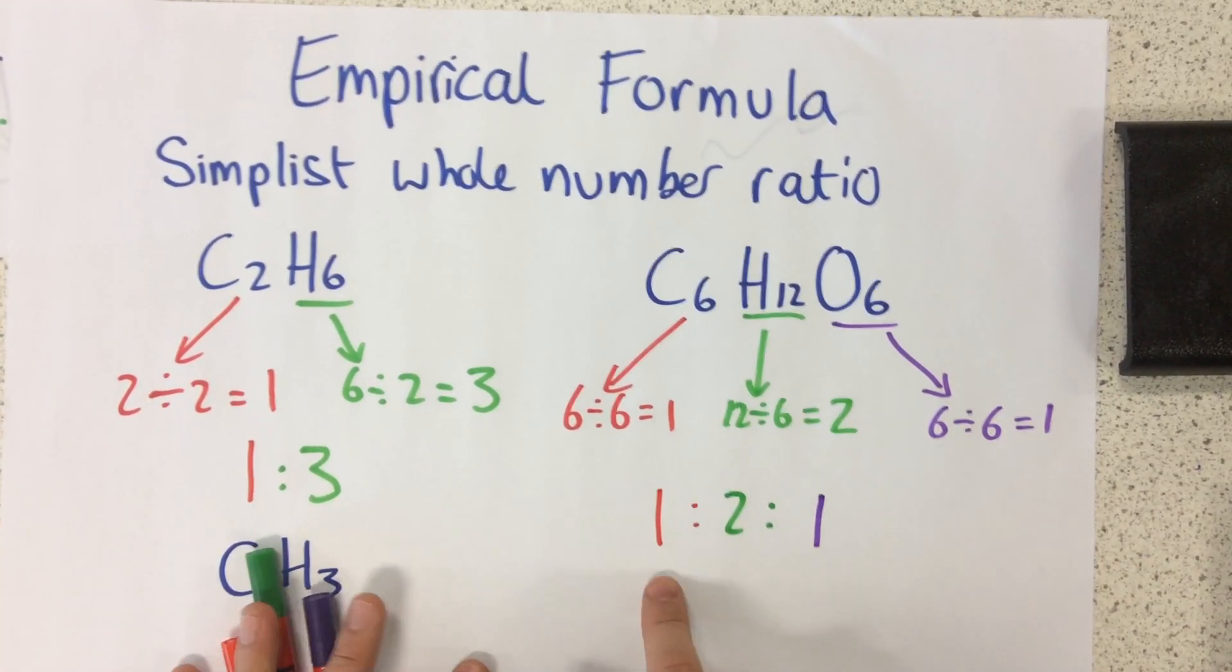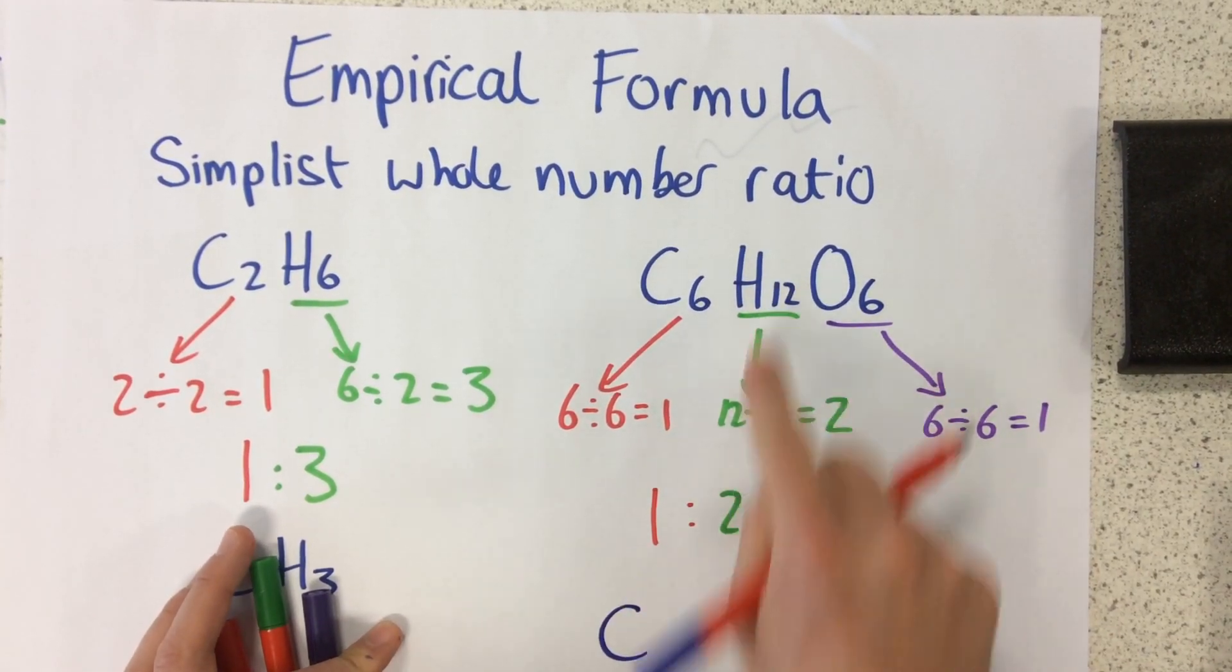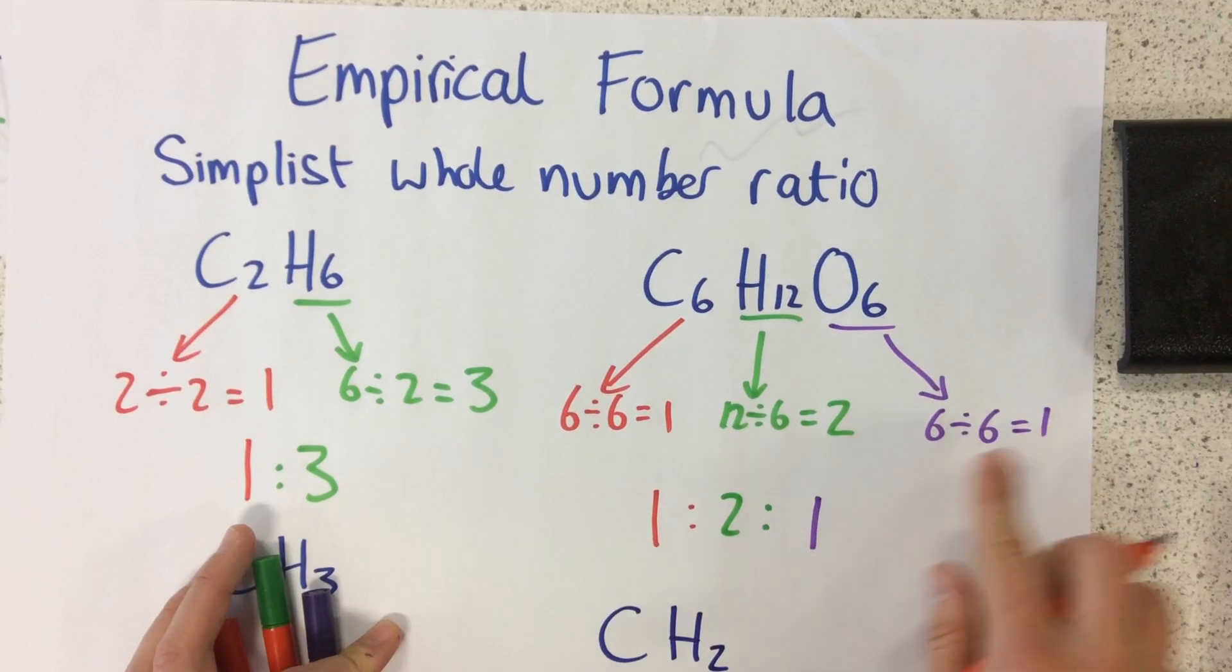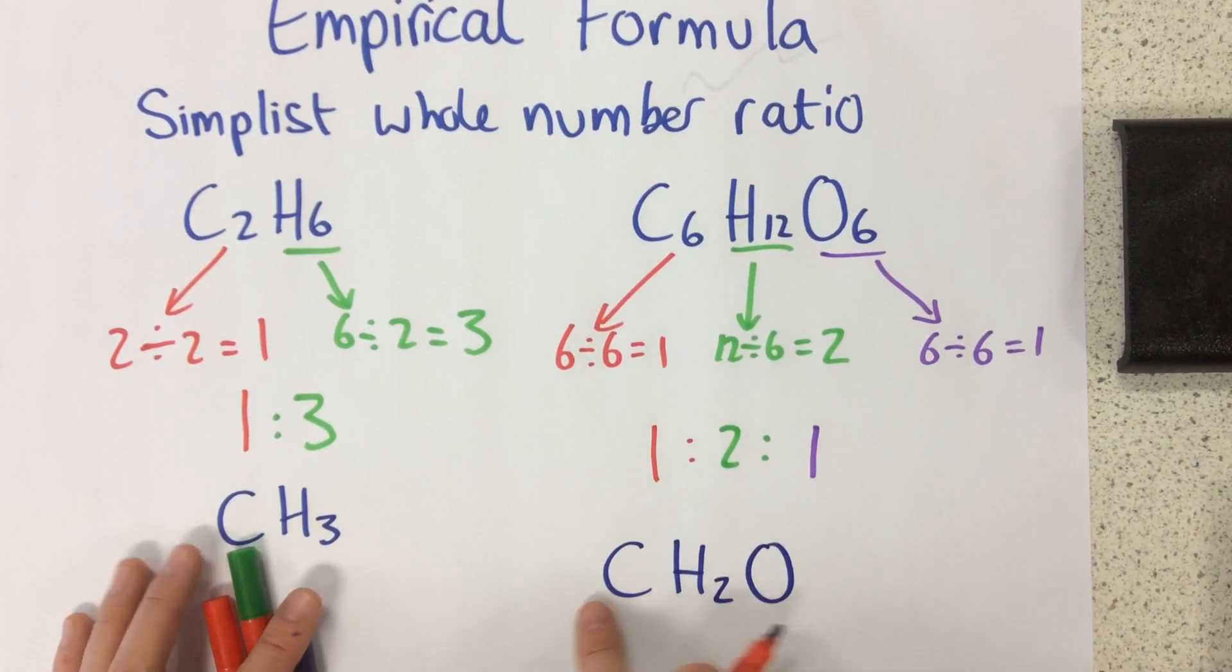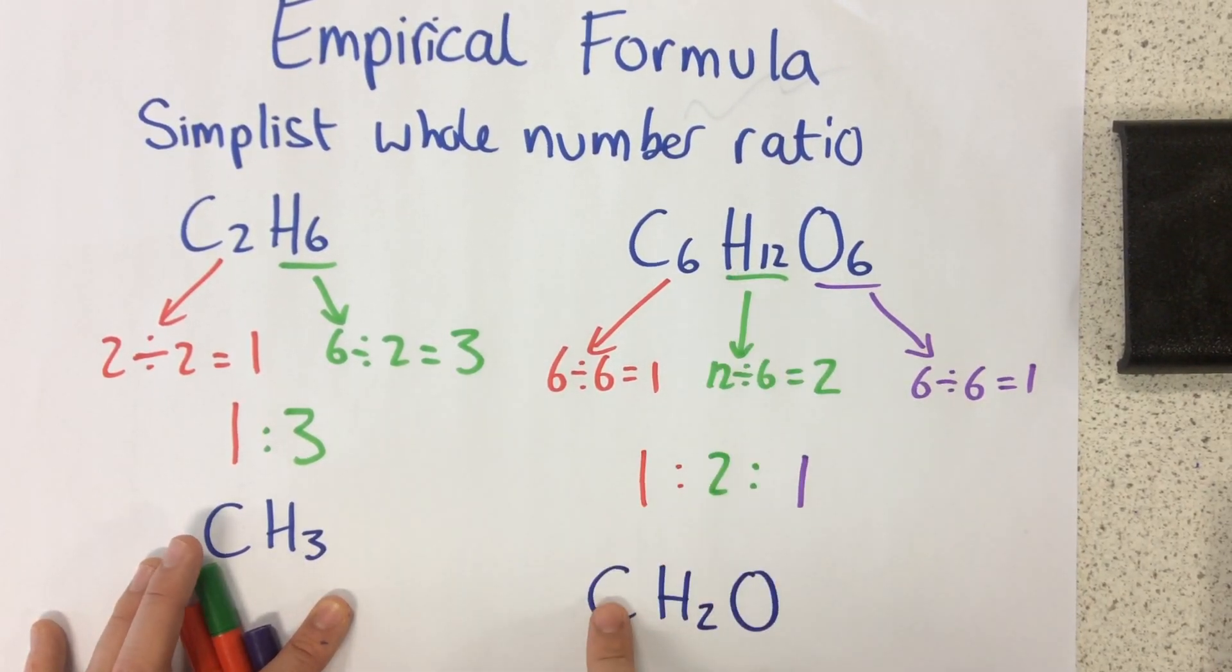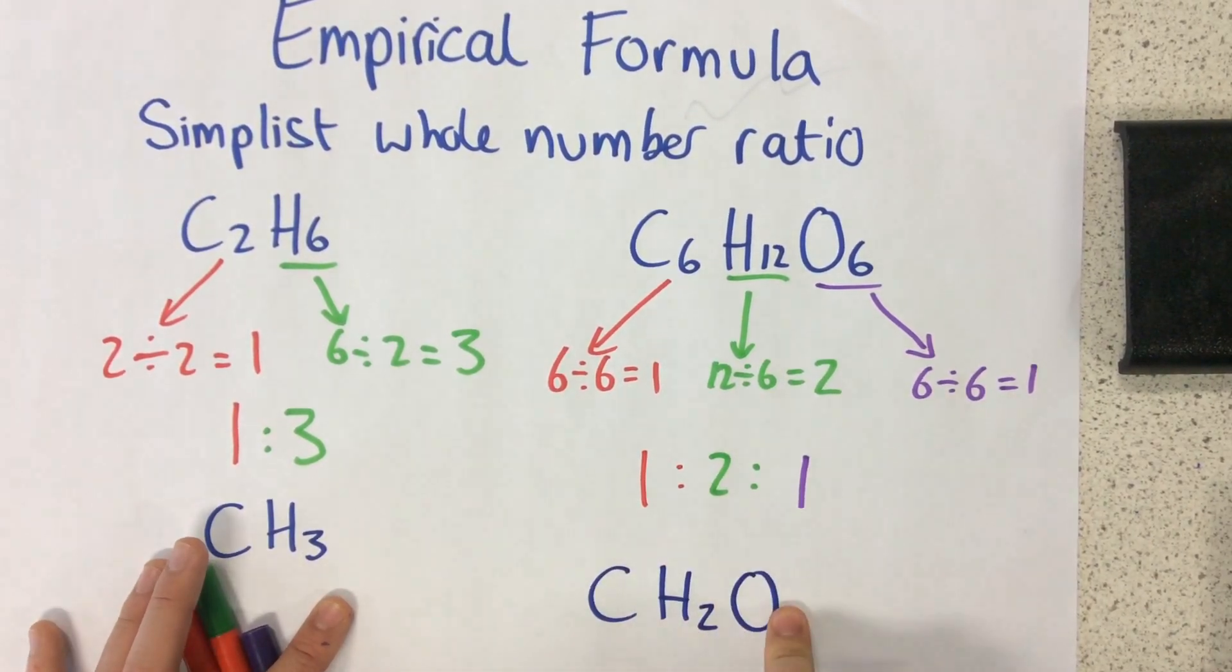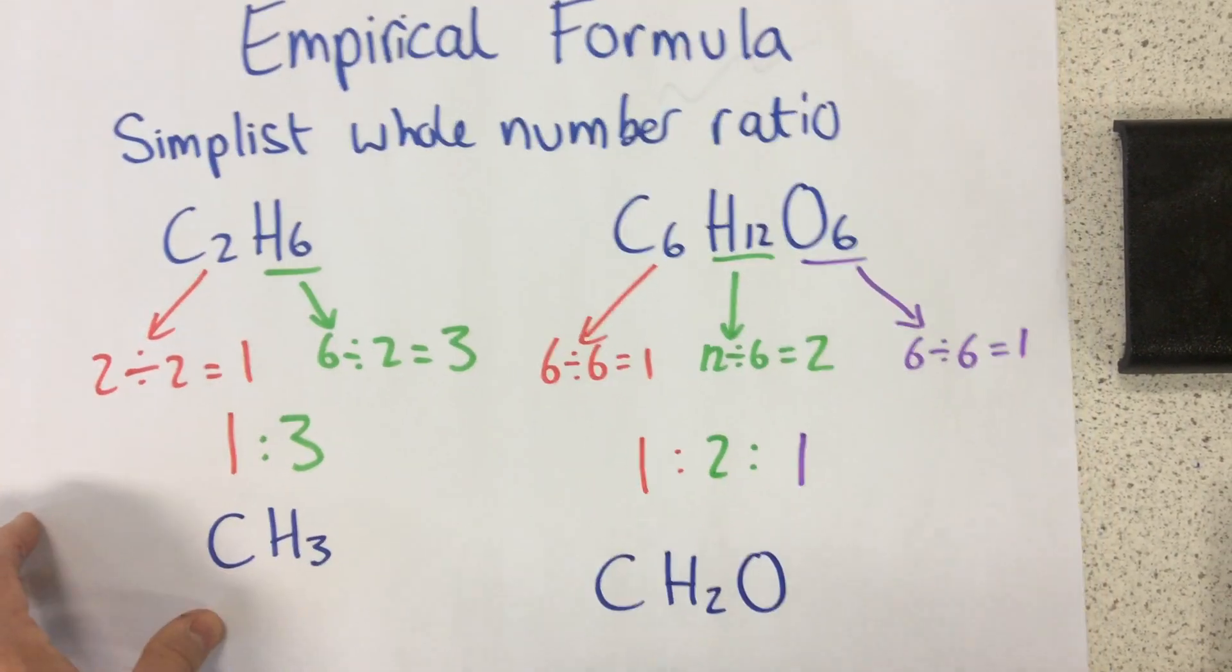So how do I write that? So one carbon, so just C, two hydrogens, H2, one oxygen, O. So my empirical formula, my simplest whole number ratio of atoms within here, this is CH2O. Now, that's how to find the basic empirical formula.